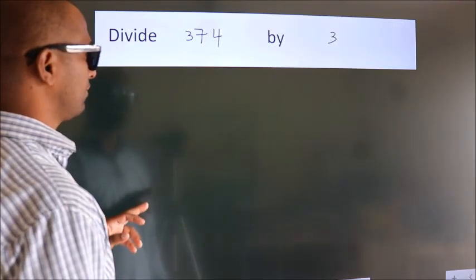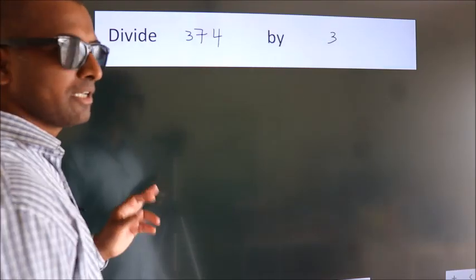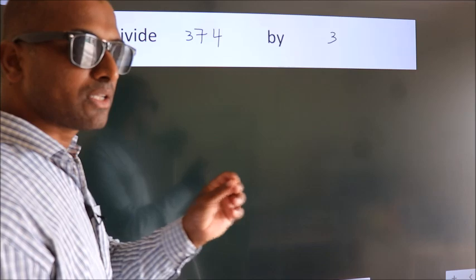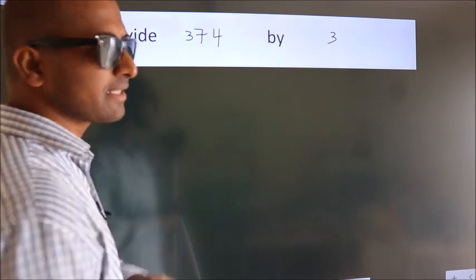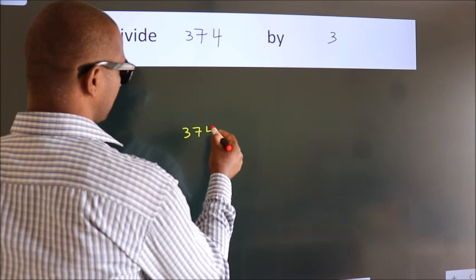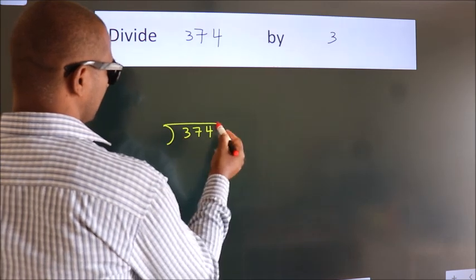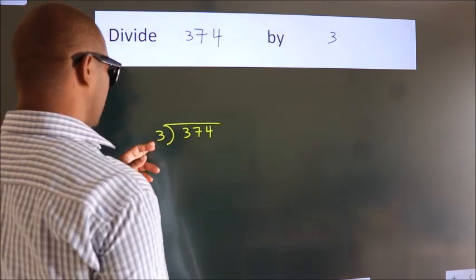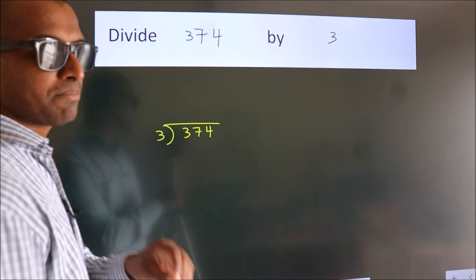Divide 374 by 3. To do this division, we should frame it in this way. 374 here, 3 here. This is your step 1.